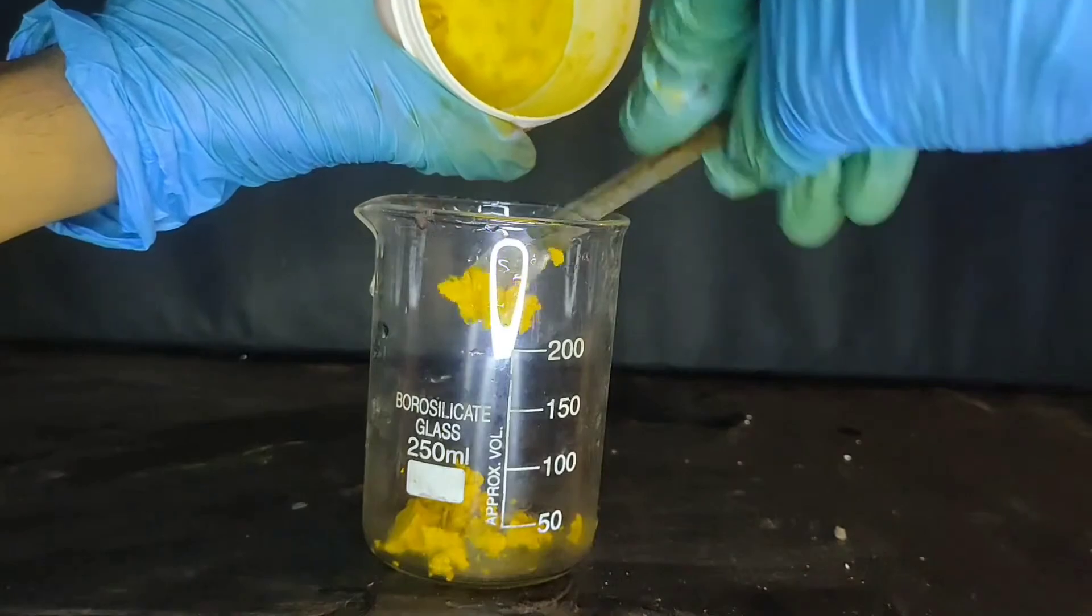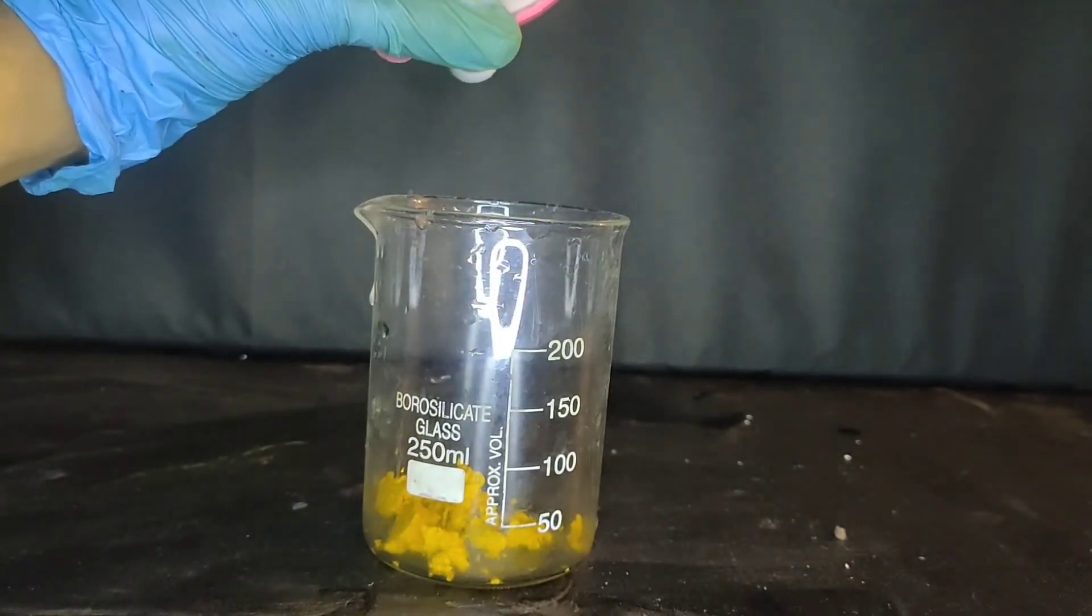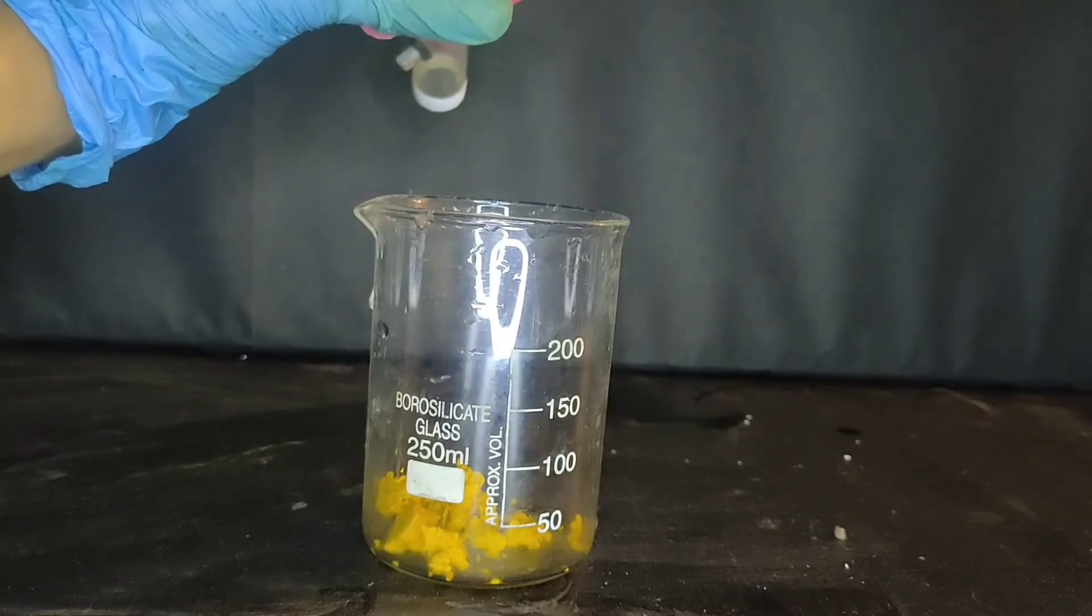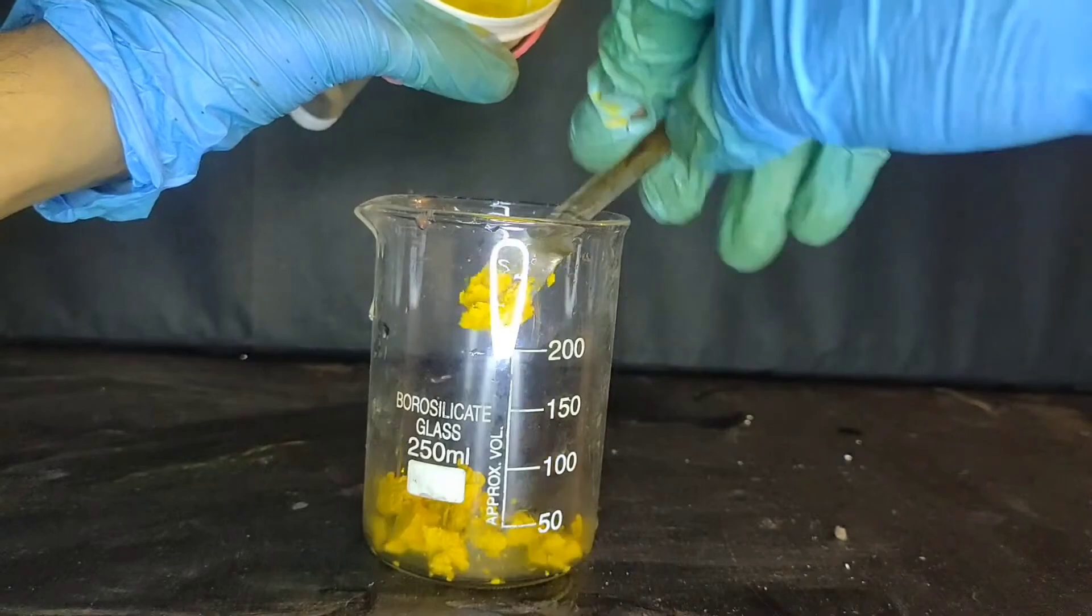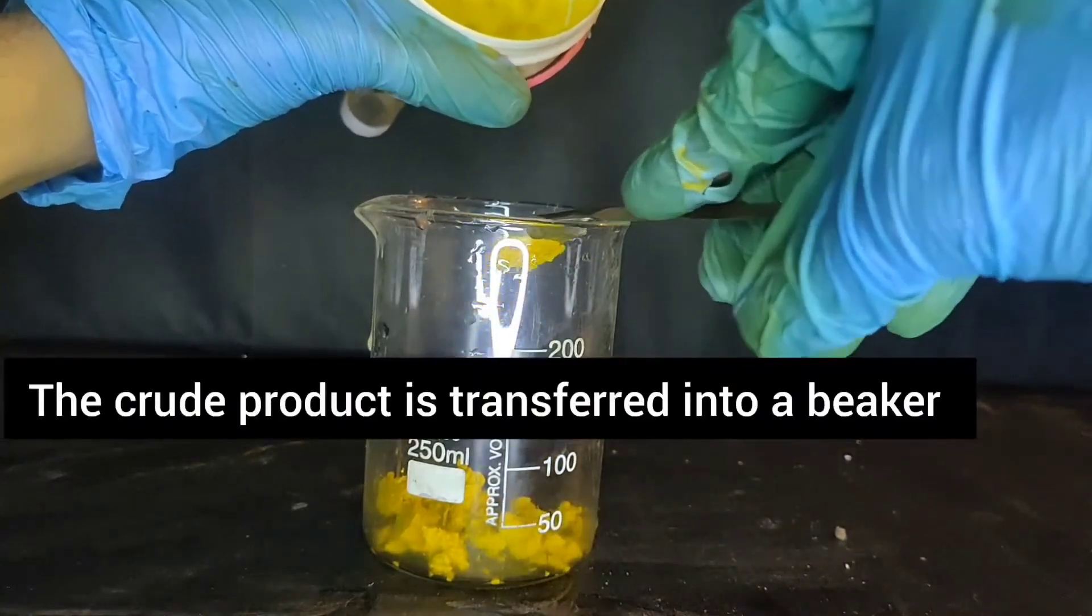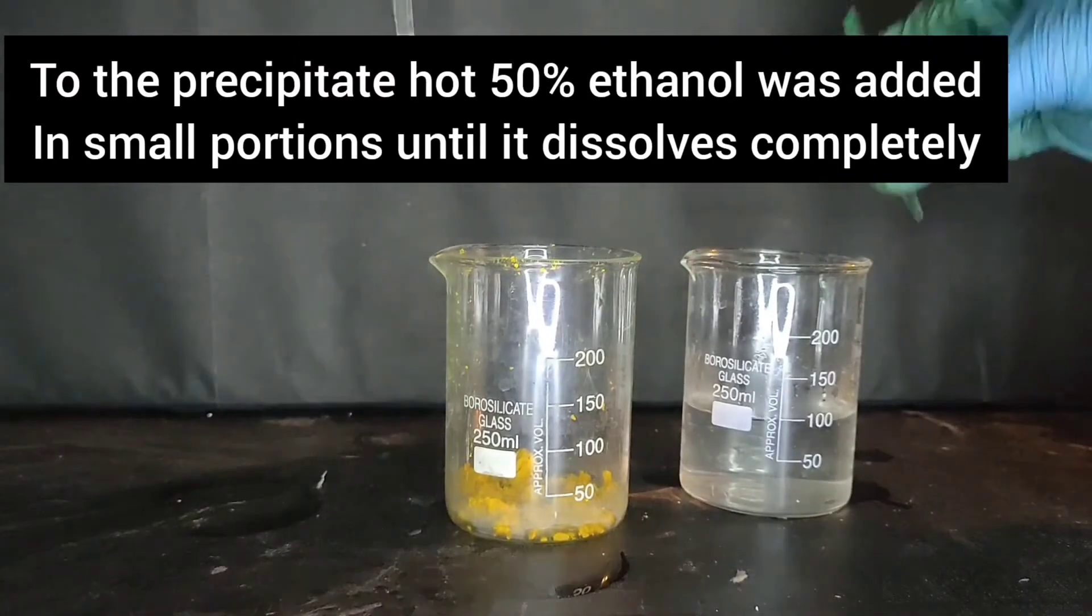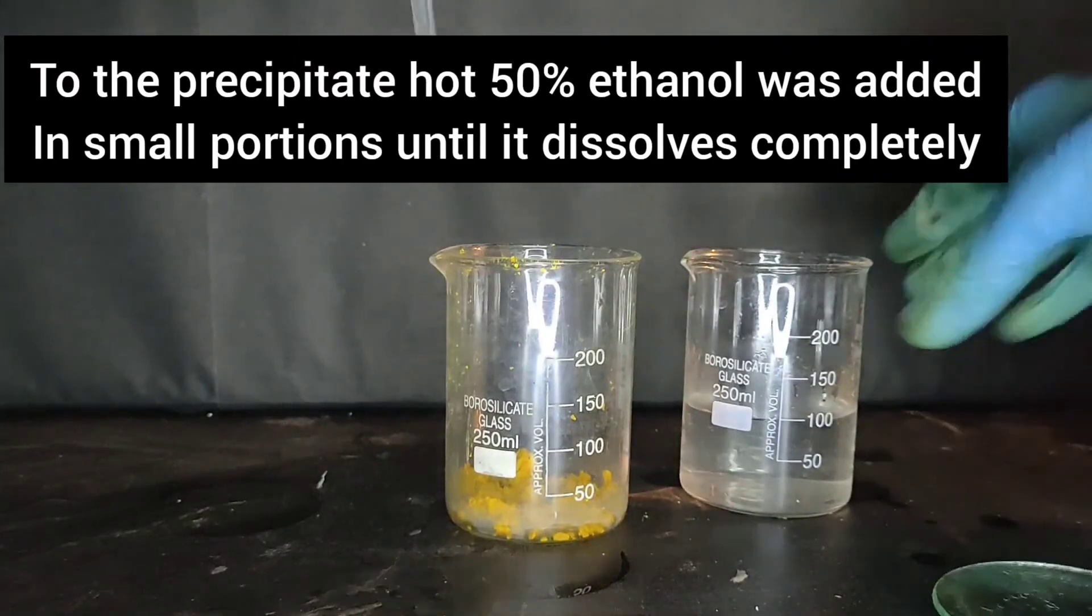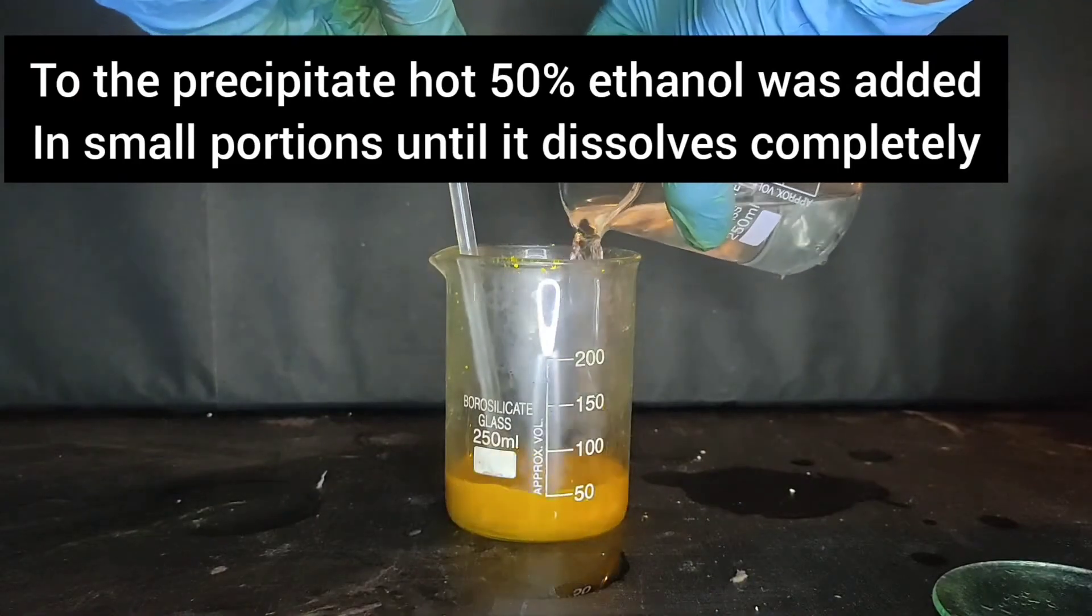This is the crude para-nitro aniline. We will be purifying it by recrystallization. To the precipitate, hot 50% ethanol-water solution was added slowly with stirring, until a clear solution was obtained.